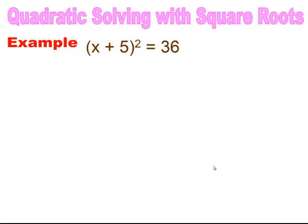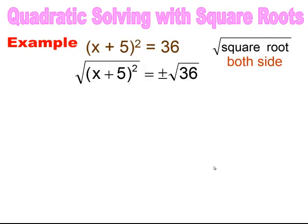Using the square root property to solve quadratics — when you have a perfect square binomial and you want to solve for x, you do the inverse operation of a square. X is inside the parentheses, and there's a square on the outside. To solve, I can eliminate that square by square rooting both sides, which gives me the expression inside the parentheses equal to both positive 6 and negative 6.